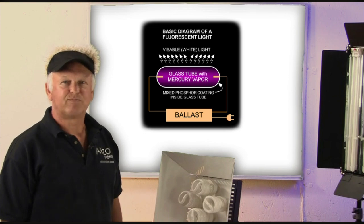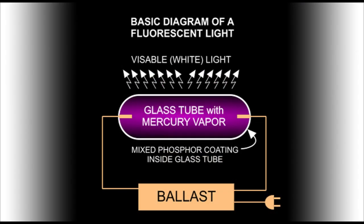Fluorescent light is produced by a two-step process. First, mercury vapor in a sealed tube is excited by an electronic current to produce ultraviolet light. Then there is a phosphor coating on the inside of the glass tube and the short wavelength ultraviolet light is converted into visible light by the process of fluorescence.